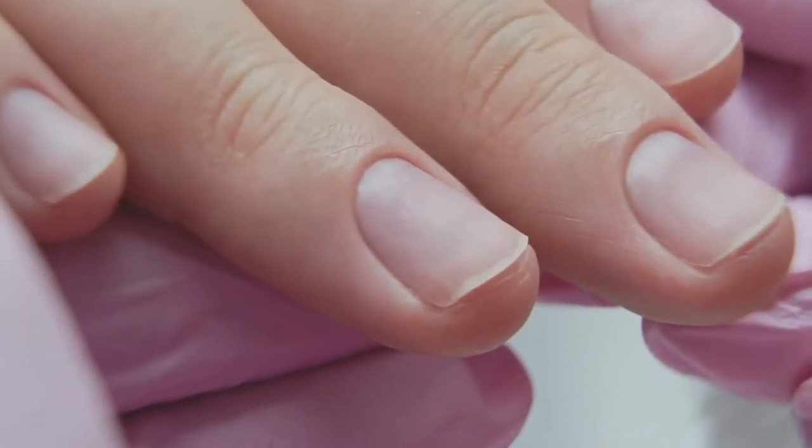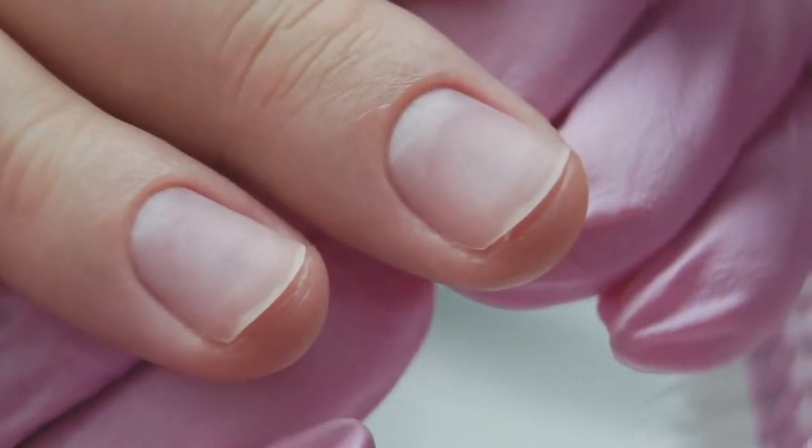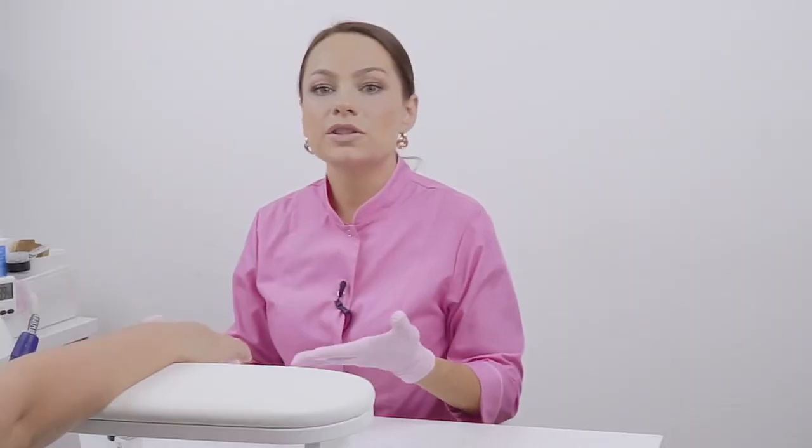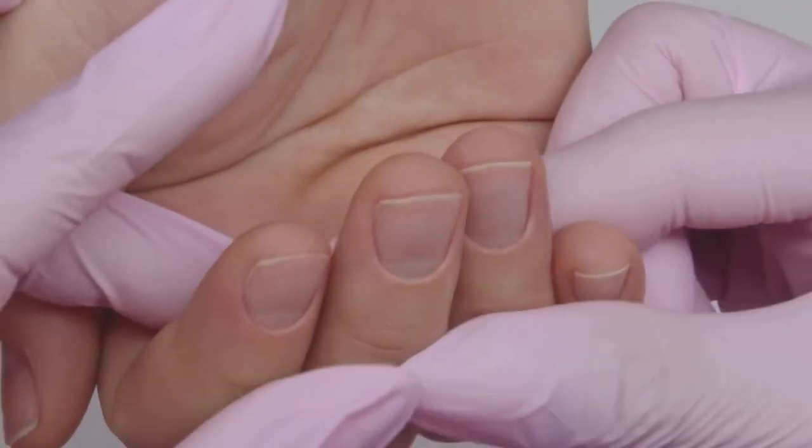Now it's important to choose the right base coat for this nail plate type. We always need to choose the right base according to the client's nail plate type. Since these nails are not long, I will take a liquid base or a medium consistency one in order to spread it faster.